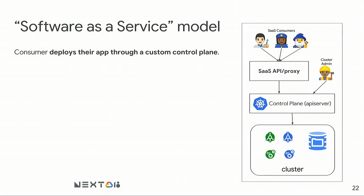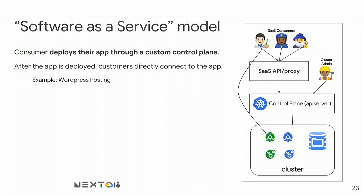The software-as-a-service model is a bit different. In this case, the consumer deploys their app through a custom control plane. Users of your SaaS don't know Kubernetes much — they may not see Kubernetes at all. After they deploy their app, they connect to it directly, so Kubernetes is an implementation detail.